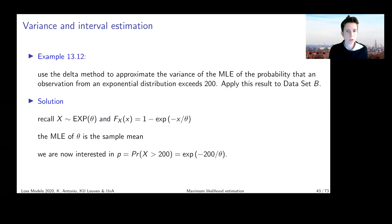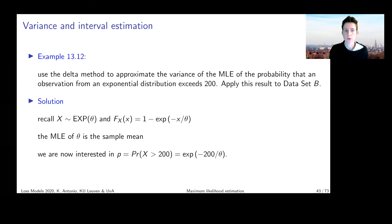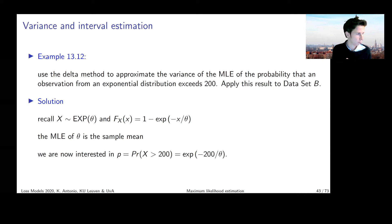So let's make that more specific on the following example. We're going to look at the probability that an observation from an exponential distribution exceeds 200. We want to estimate this probability and quantify the variance that comes with this estimate, using the data in dataset B, which was a sample of 20 losses. We're going to do that together on the iPad, going step by step through the actual calculations.